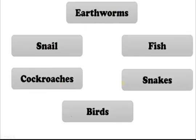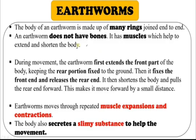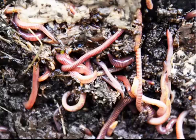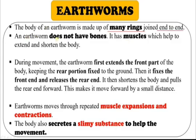First, let us study earthworms. The body of an earthworm is made up of many rings joined end to end. You can see the rings present in the earthworm — each ring is completely closed. Earthworms do not have bones; they have only muscles, and these muscles help to extend and shorten the body.